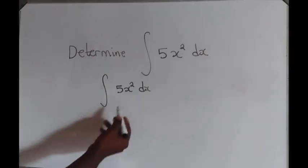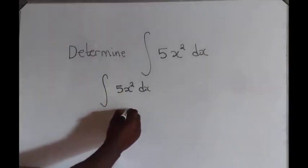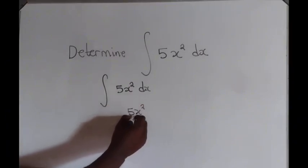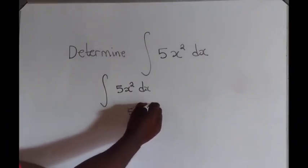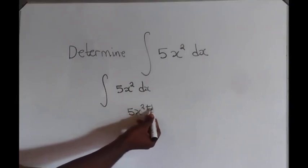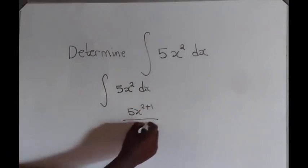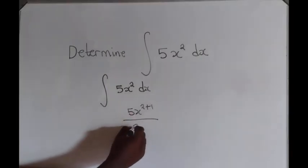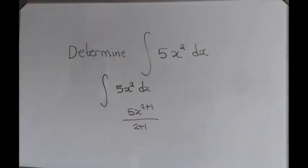So if you have something like this, you are integrating 5x squared. So here we are going to add 1 to the power. The power 2 is going to be added with a 1, then over the same, this power 2 plus 1.